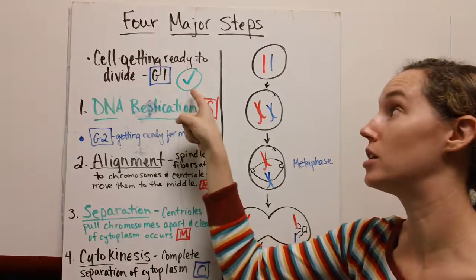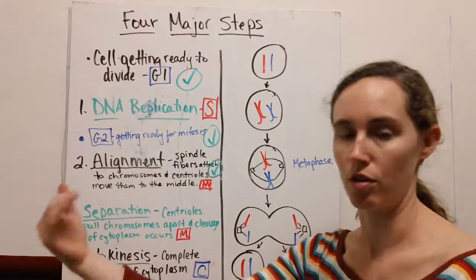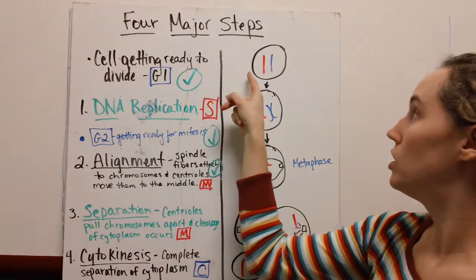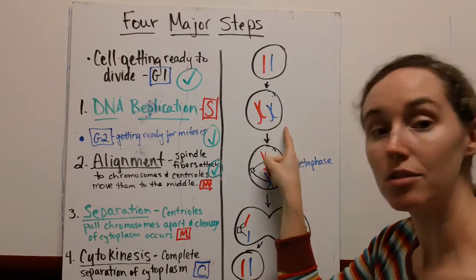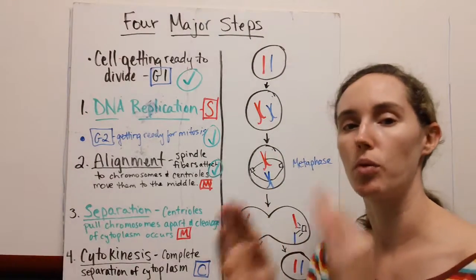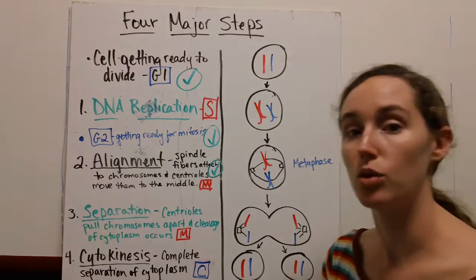Once we reach that G1 checkpoint, then we're going to progress farther. Once this G1 checkpoint is passed, we move into S phase synthesis, where we replicate our DNA. Now you can see you have two copies of each chromosome here.